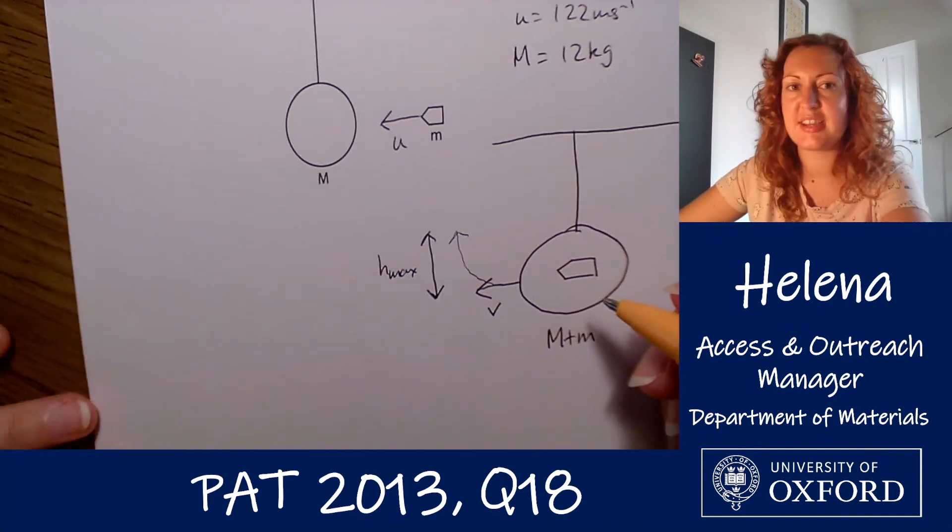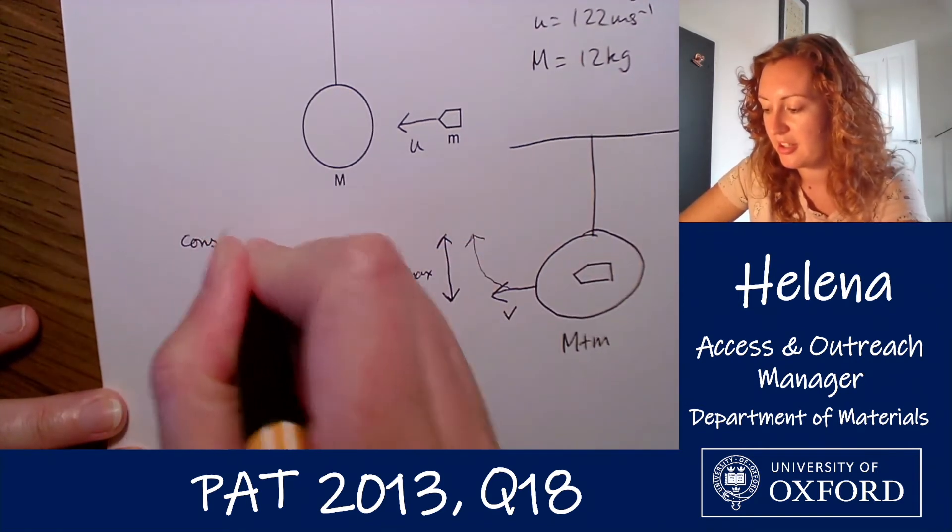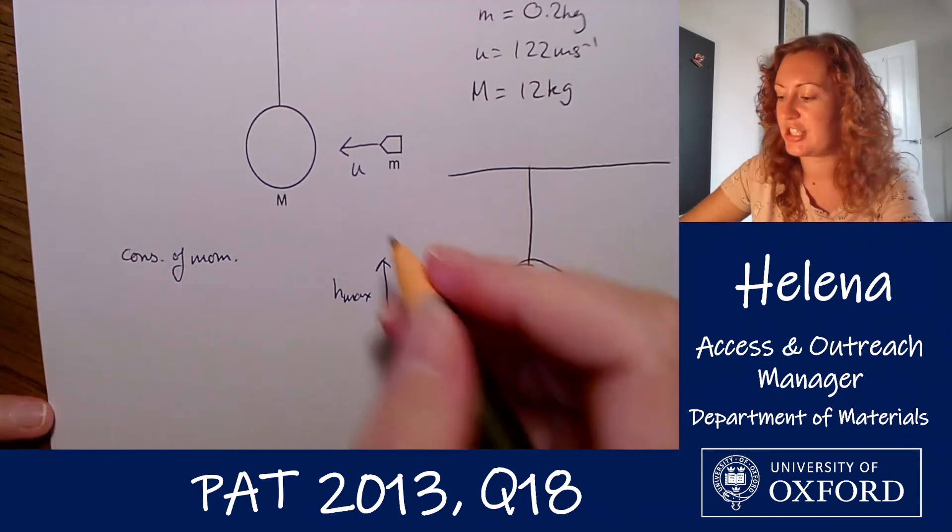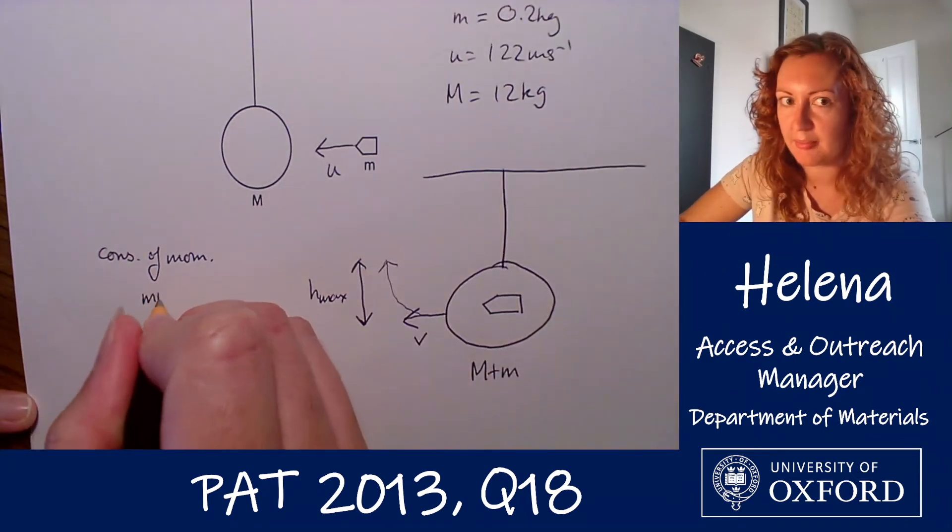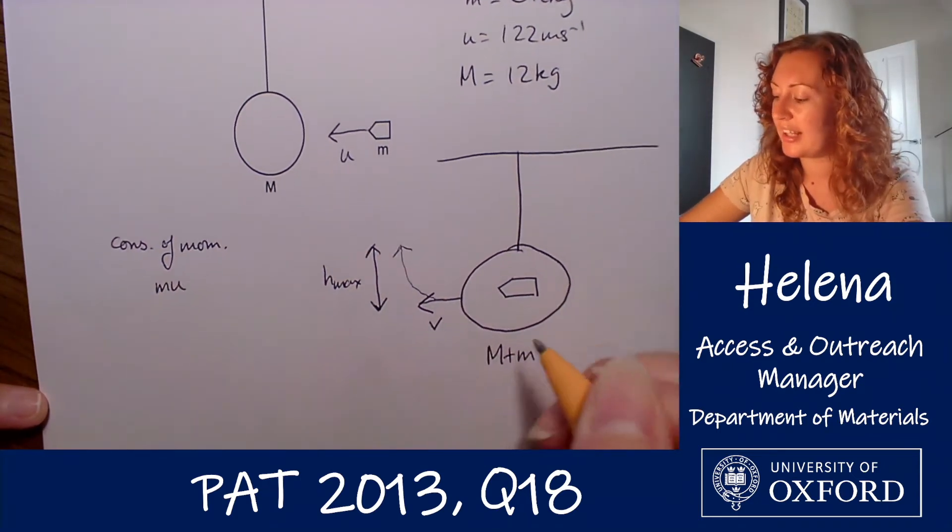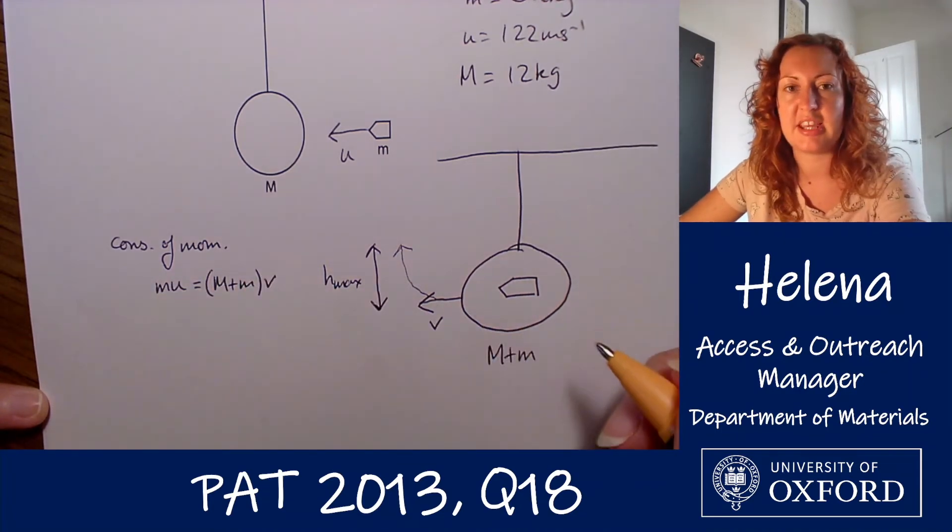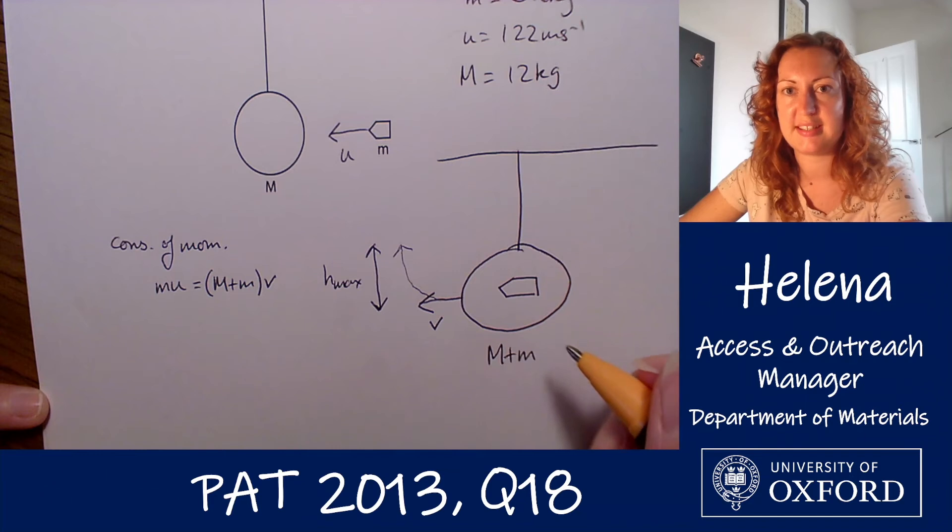Okay, so first things first, let's consider momentum, so conservation of momentum. Before the collision we have a momentum of little m times u, and following the collision we have a momentum of big M plus little m times v, this initial velocity here.